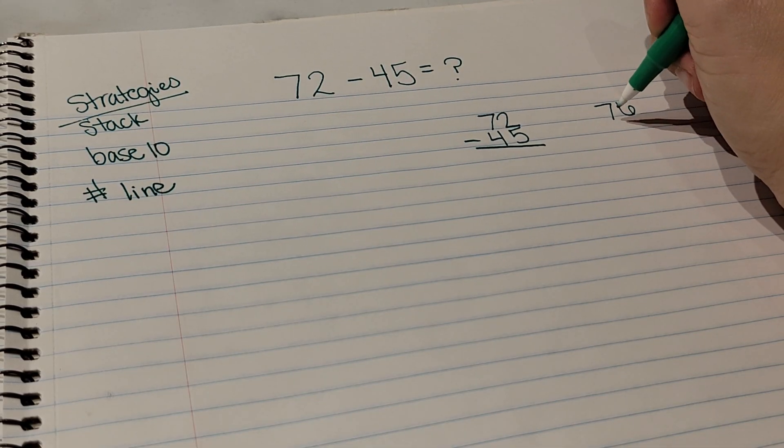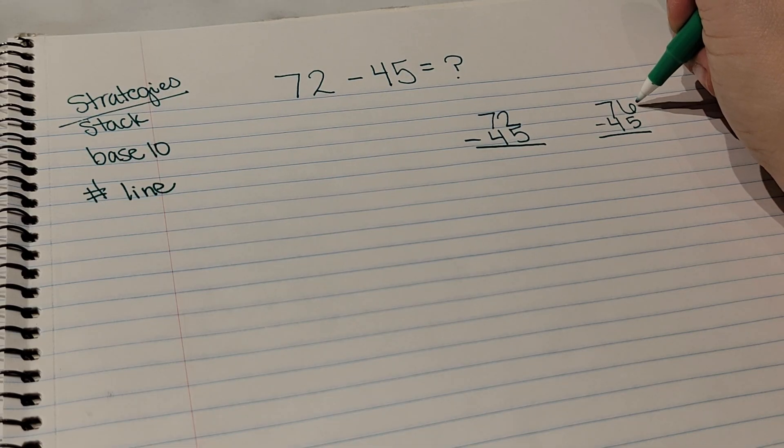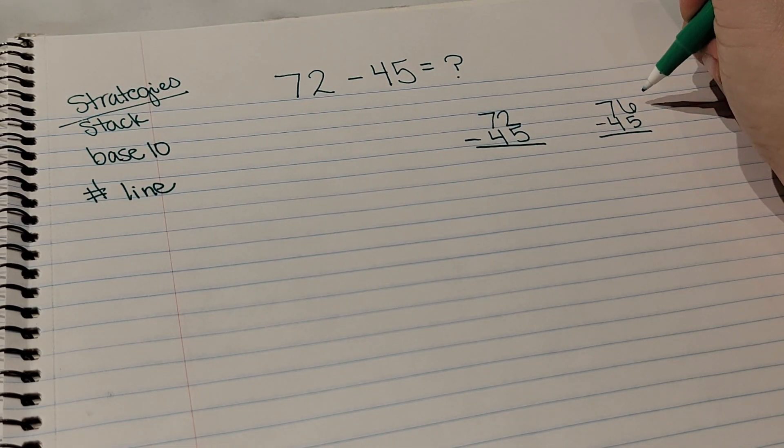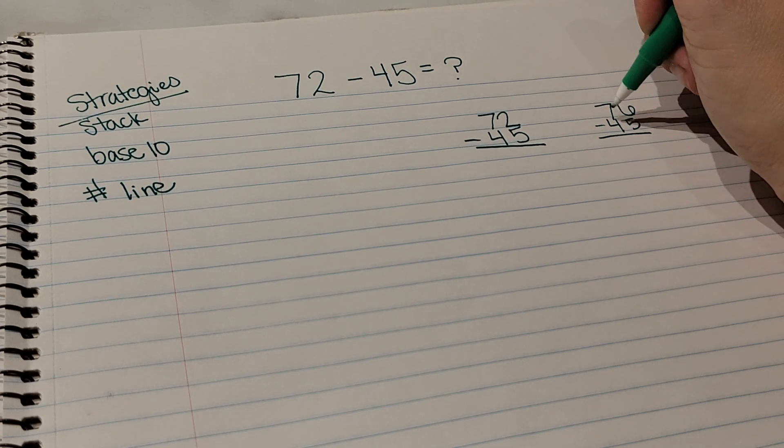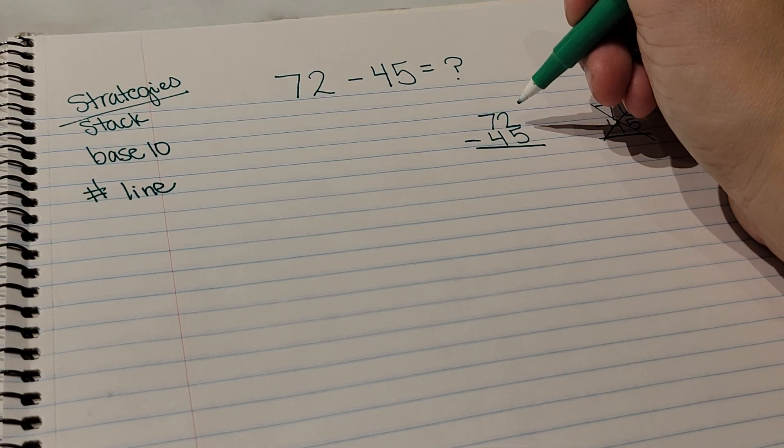So here I see a 2 on the top and a 5 on the bottom. Now since my 2 is smaller, I cannot do that chant. However, if I had 76 minus 45, the 6 is larger than this 5, there's more on the top, so I don't need to stop and go next door to borrow.